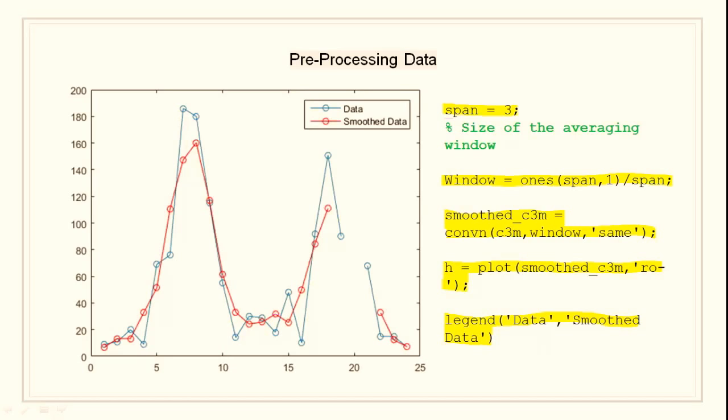The extent of smoothing is controlled with the variable span that is the size of the averaging window. The averaging calculation returns NaN values whenever the smoothing window includes the NaN value in the data, thus increasing the size of the gap in the smooth data.